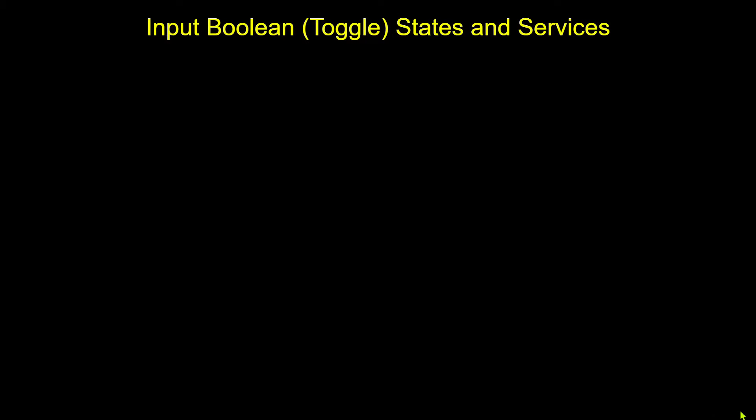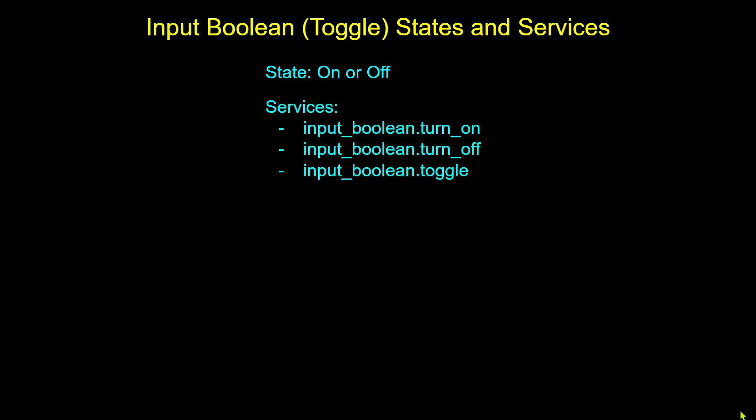Let's take a quick look at the available states and services for input booleans or toggles. In terms of state, an input boolean by the definition of boolean only has two states: off or on. It could actually have a state of unavailable or unknown when you first create it before a state has been set, but once set it will always be either off or on. As far as services, there are three: turn the input boolean on, turn it off, or toggle it, which will just flip the state.